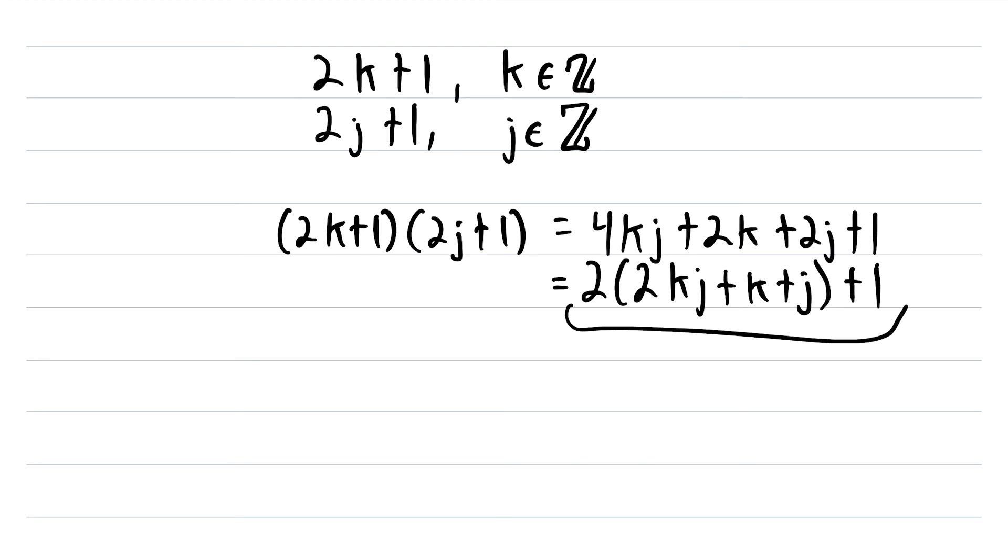So since this is an odd number, and it's equal to this, we know that this is an odd number. And that was the point of the proof, to show that the product of two arbitrary odd numbers is also an odd number. And that completes the outline of the proof.